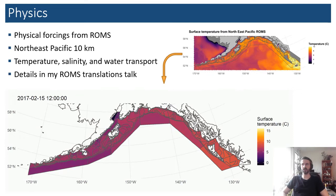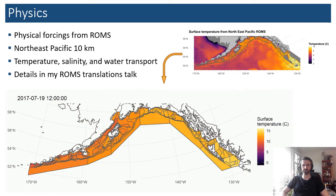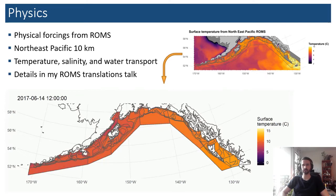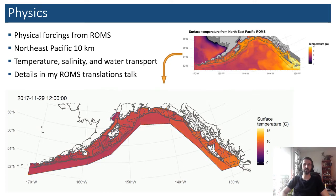For the physics, we are translating ROMS output — specifically ROMS NetCDF output from the Northeast Pacific 10-kilometer resolution ROMS model developed by Al Hermann at the University of Washington. We're taking temperature, salinity, and water transport; we're not imposing any nutrient or plankton variables. We let Atlantis resolve those in-house. If you're interested in the details of translating ROMS into Atlantis forcing files, I invite you to check out my other talk on doing just that for the Gulf of Alaska and the California Current.